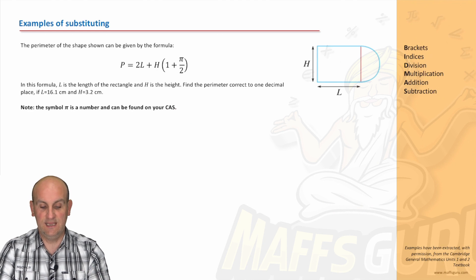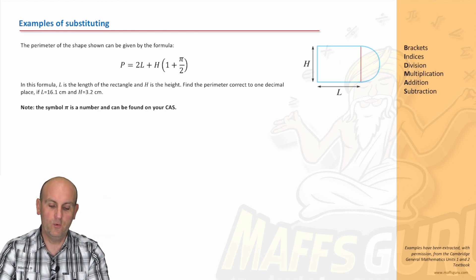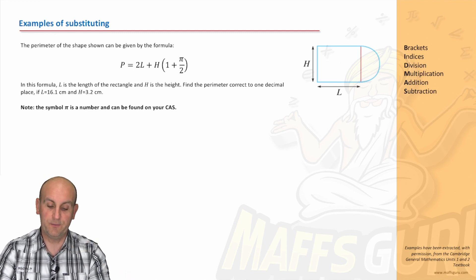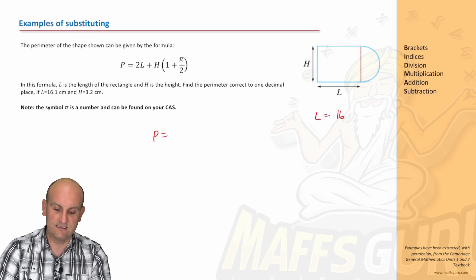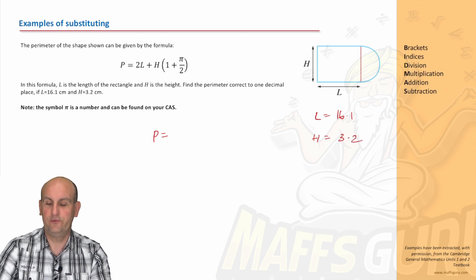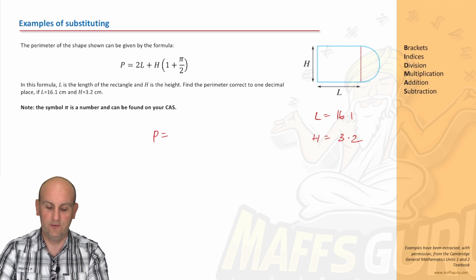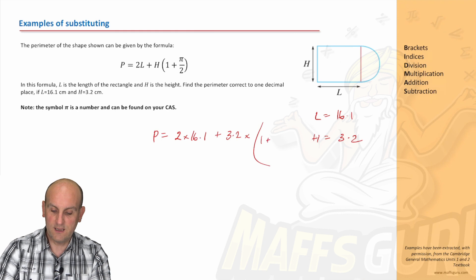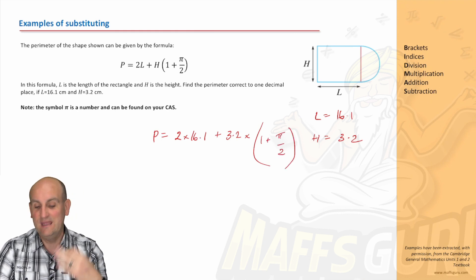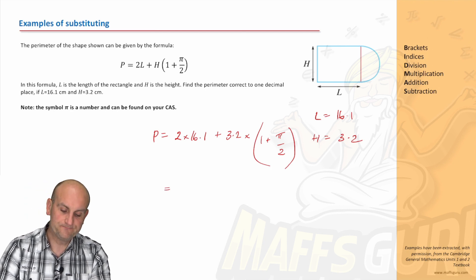Here's another example. The perimeter of a shape can be shown by the following formula: P equals 2L plus H times bracket 1 plus pi on 2. In this formula, L is the length of the rectangle and H is the height. Find the perimeter to one decimal place if L equals 16.1 and H equals 3.2. So we take the letter L out and put in 16.1, and where I see H I put in 3.2: P equals 2 times 16.1 plus 3.2 times bracket 1 plus pi divided by 2. Remember, pi is a number on your calculator.